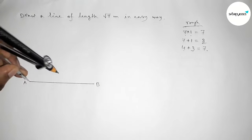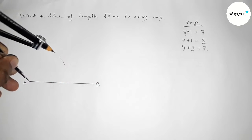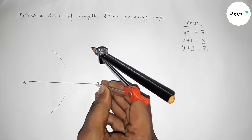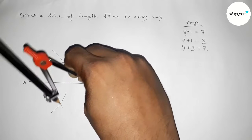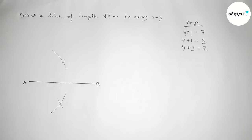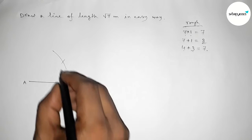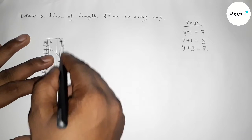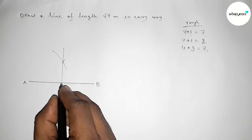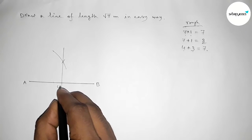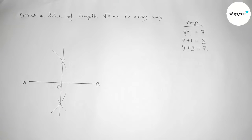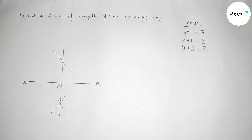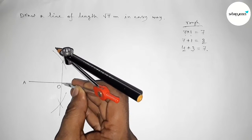Putting the compass on point A and taking greater than half of AB, drawing an arc. With the same length, putting the compass on point B and cutting arcs on both sides. Both curves intersect at two points. Joining these points bisects line AB at midpoint O, so OA and OB are equal — each is 4 centimeter.